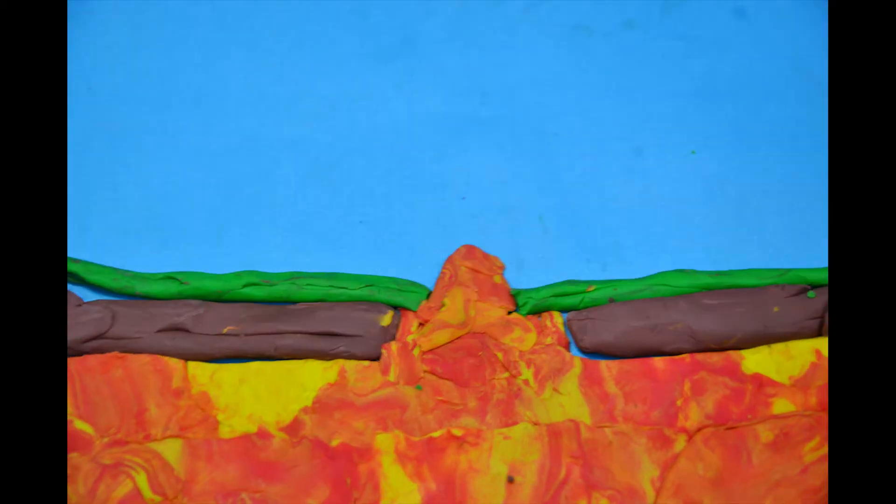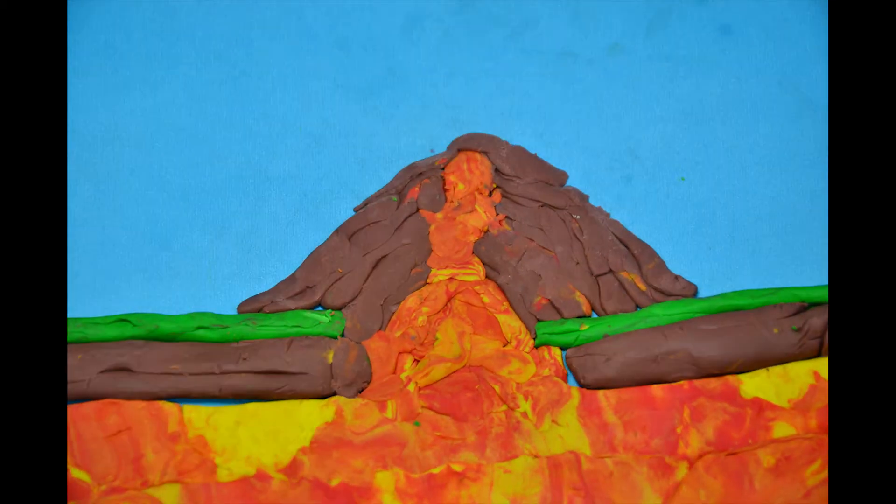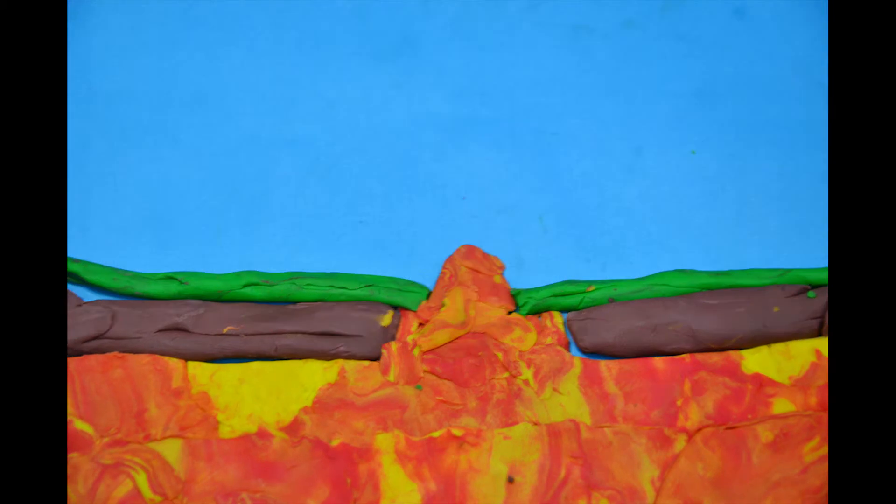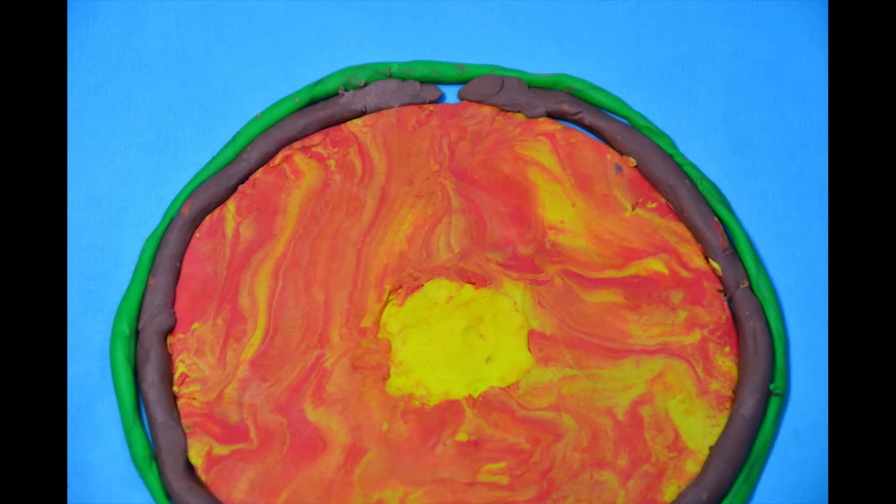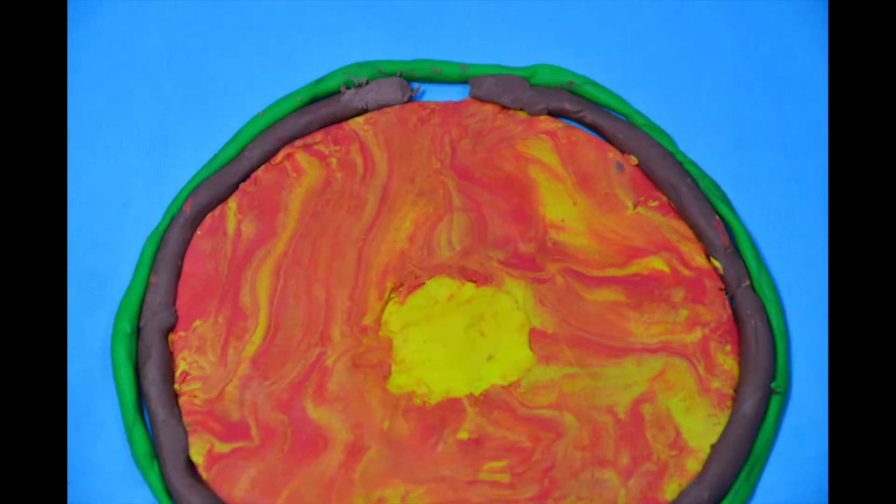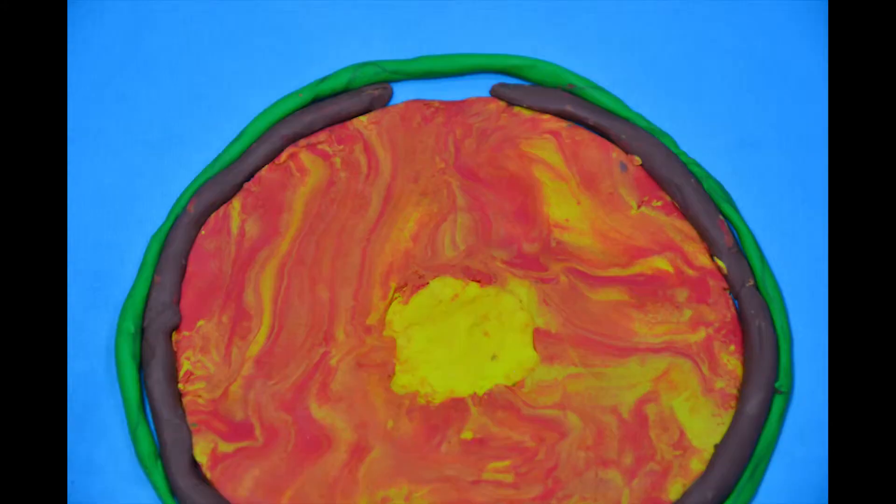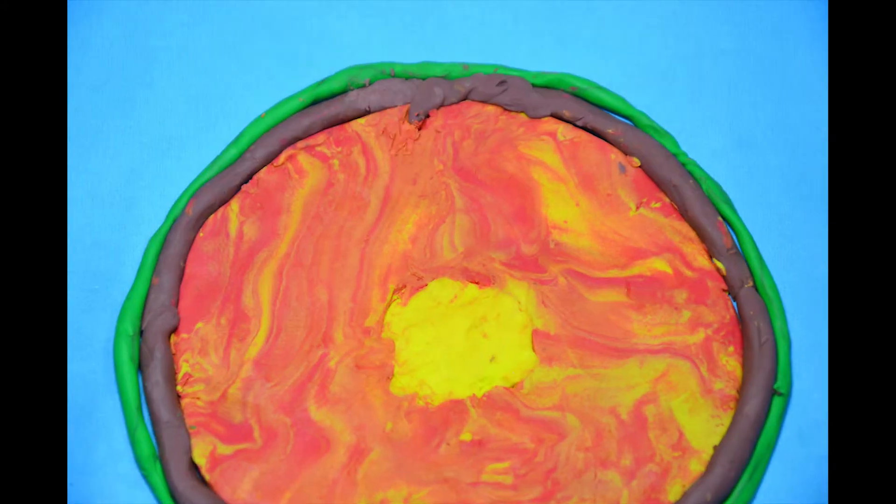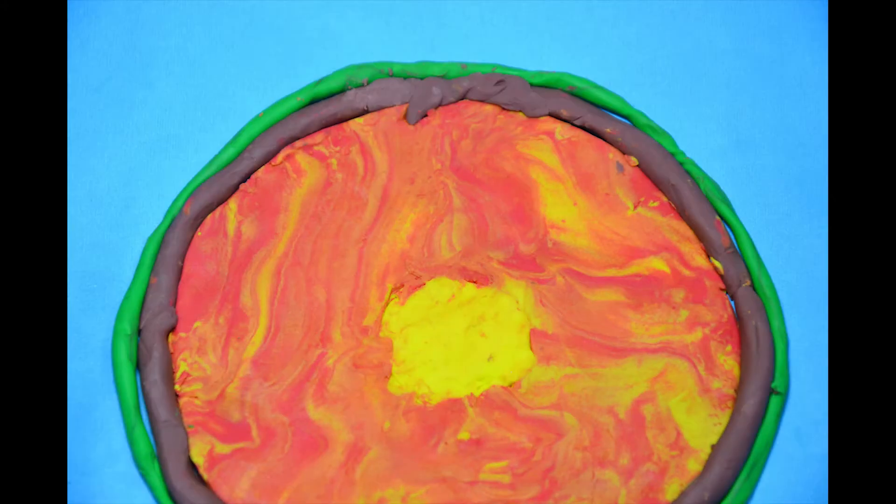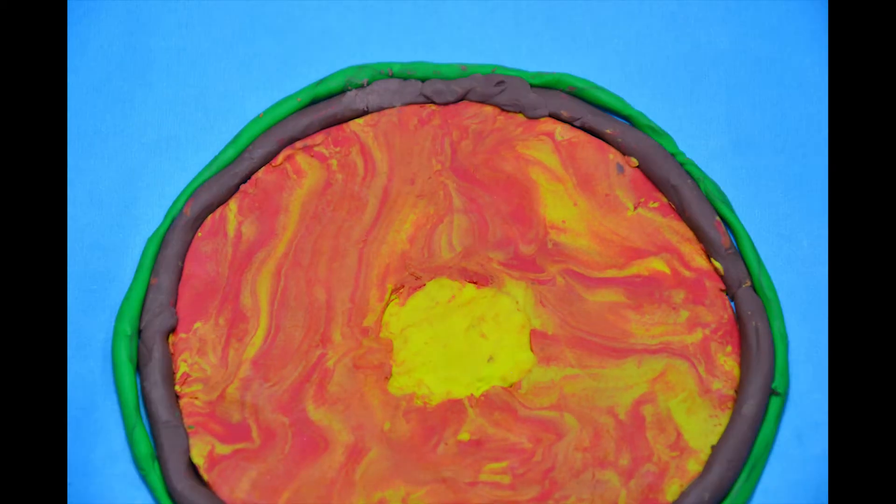Divergent boundaries occur when two plates are going away from each other. Convergent boundaries occur when two plates go against each other. This boundary creates a subduction zone wherein the denser plate goes under while the lighter plate stays afloat.